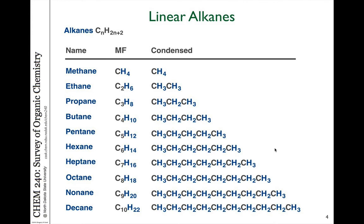Let's talk about the simplest of alkanes — the linear alkanes. They are essentially carbon chains with the rest of the bonds made up of hydrogens. The smallest is the alkane of one carbon, which we call methane. It's a gas — that's actually what natural gas is made of, and we burn it for fuel in our homes. It has four hydrogens and one carbon with a tetrahedral shape. So CH4 is the simplest of the alkanes.